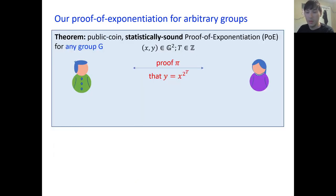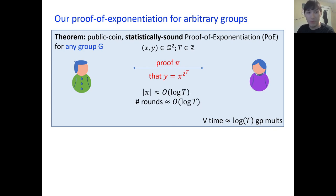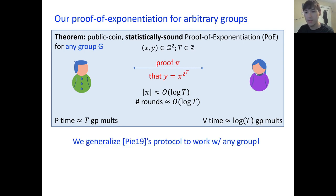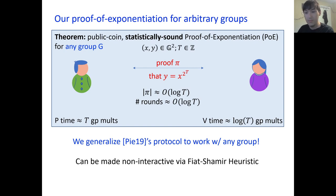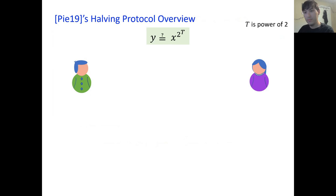The main theorem: it is a public coin, statistically sound PoE over any group, where the verifier time is logarithmic, the proof size and number of rounds is logarithmic, and the prover time is linear. We generalize Pietrzak's protocol to work over any group, and this can be made non-interactive via the Fiat-Shamir heuristic. We're going to briefly go over Pietrzak's halving protocol, which is the core of Pietrzak's PoE, and then give our modification.